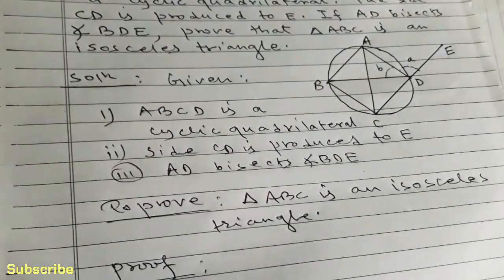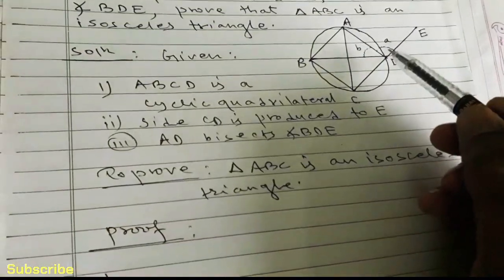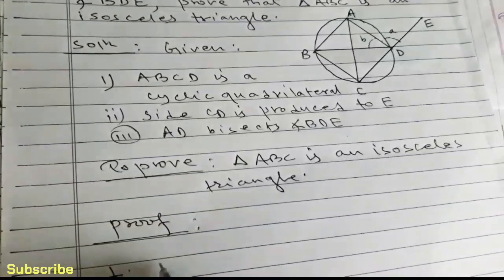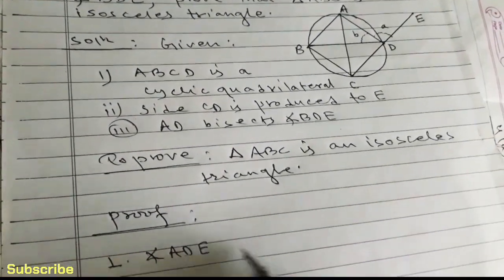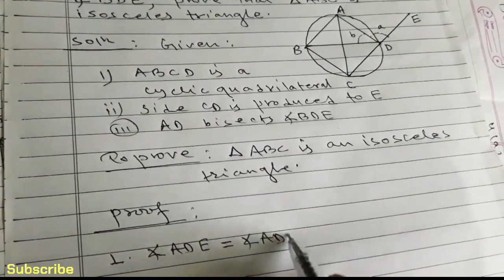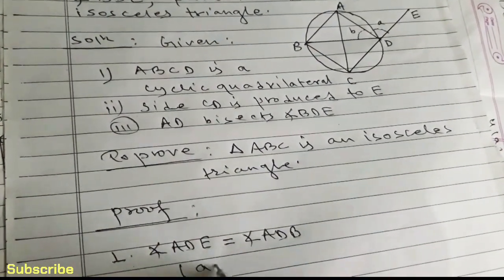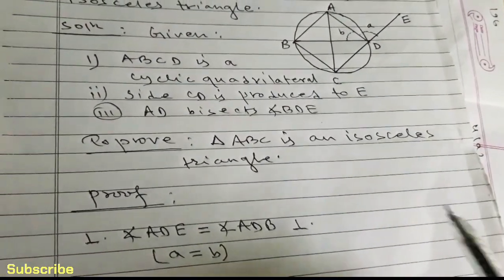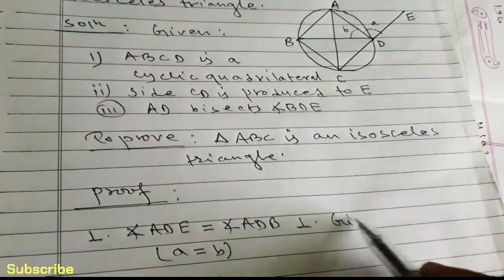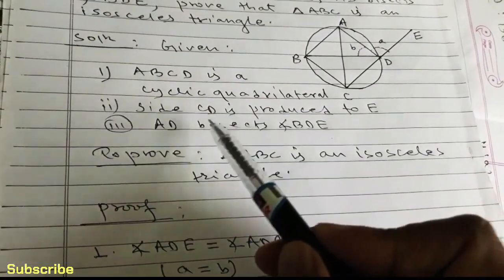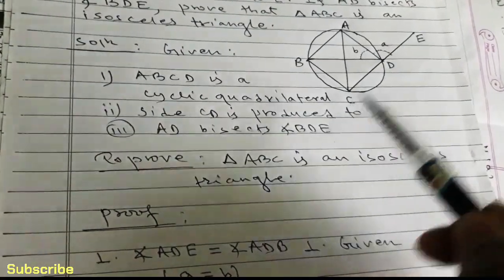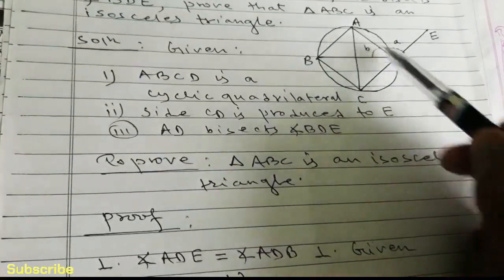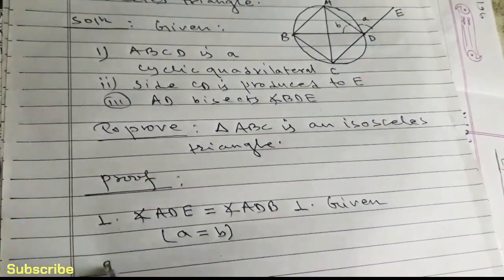In statement number 1, we can write: angle ADE is equal to angle ADB. In the figure, we have supposed the two angles ADE and ADB as A and B so that it will be easy to combine. The reason is given — we are already given that AD bisects angle BDE, so angle ADE equals angle ADB.